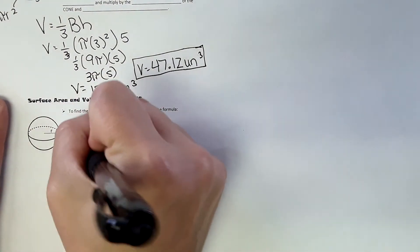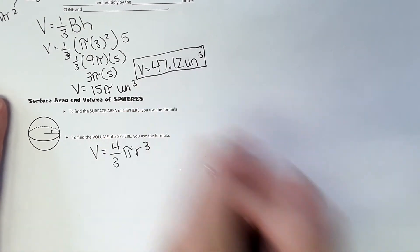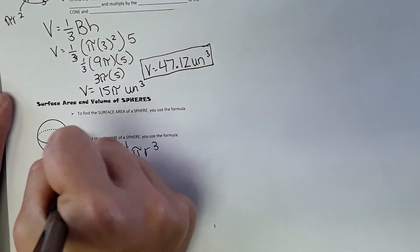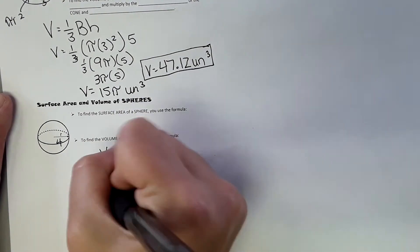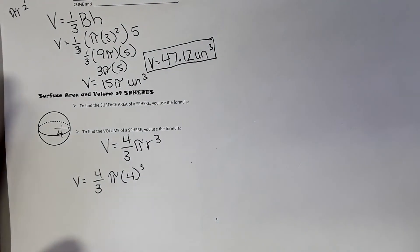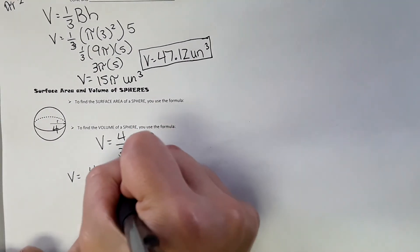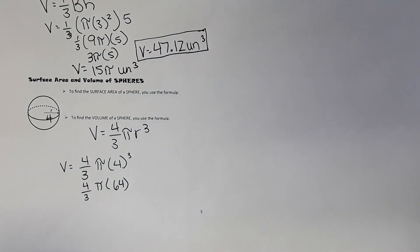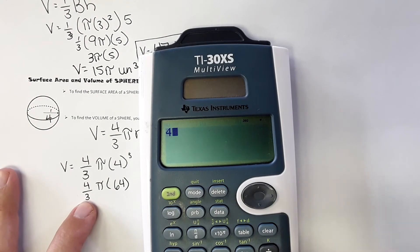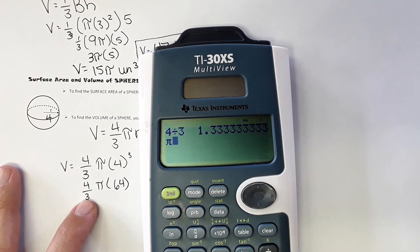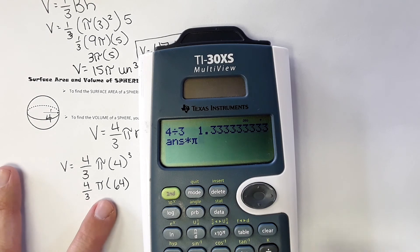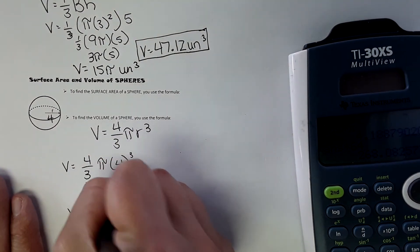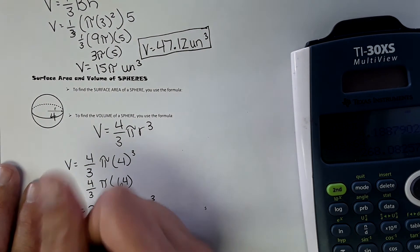Last but not least, volume of a sphere: Volume = 4/3 × π × r³. With radius 4: Volume = 4/3 × π × 4³. Four cubed is 64. In the calculator: 4/3 × π × 64 ≈ 268.08 units cubed. And you're done.